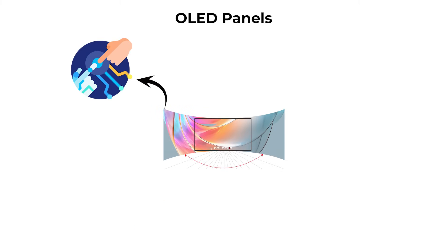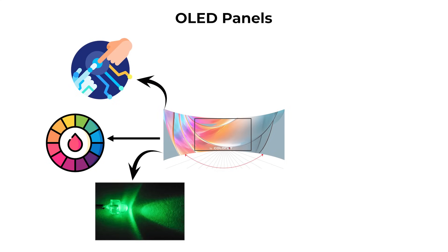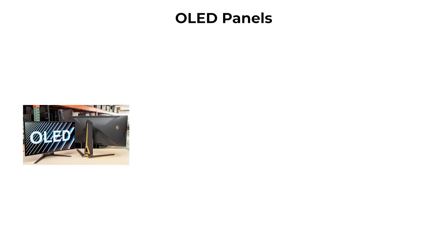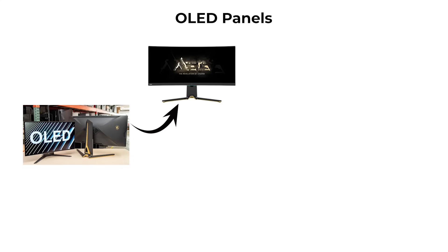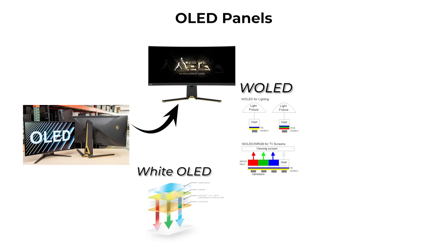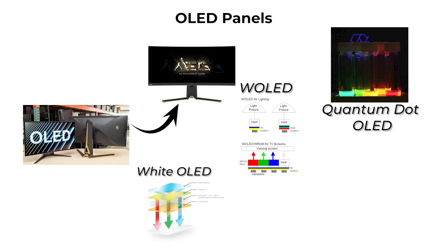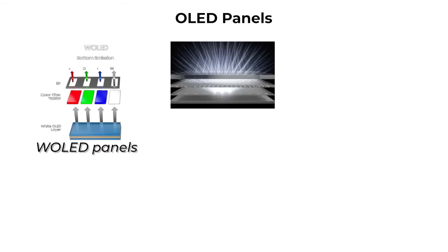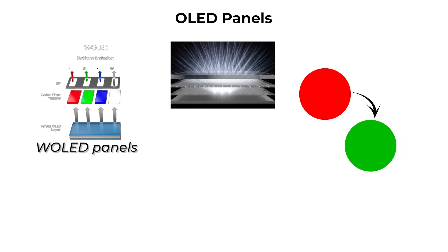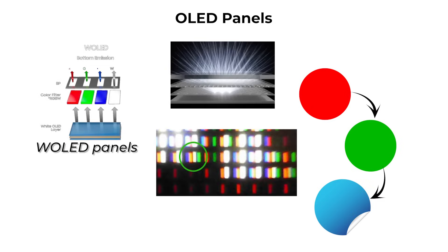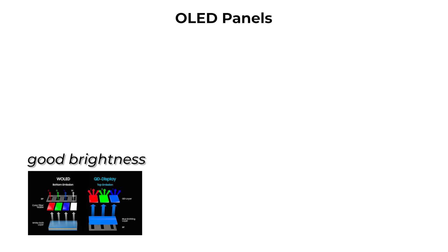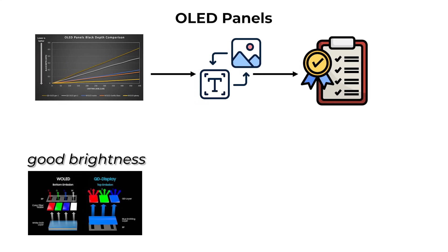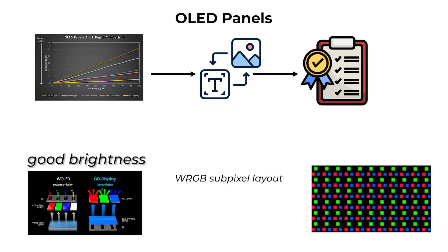Viewing angles are the best of any panel technology, with minimal color or brightness shift when viewed from the side or above. There are two main OLED types currently found in monitors: White OLED, often called WOLED, and Quantum Dot OLED, or QDOLED. WOLED panels use white-emitting subpixels with a red, green, and blue color filter, plus an unfiltered white subpixel. This arrangement provides good brightness, but can lead to lower sharpness in text rendering because of the non-standard WARGB subpixel layout.